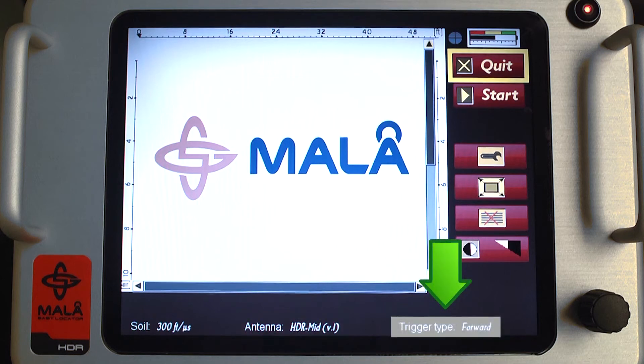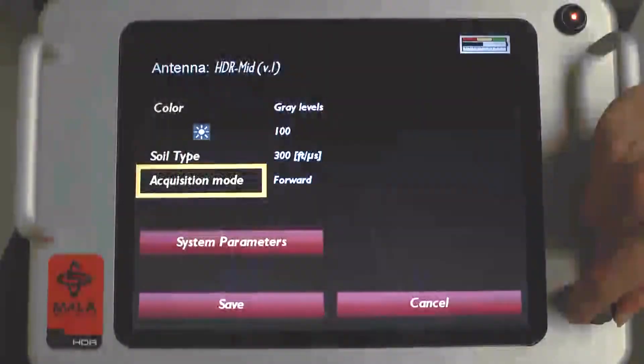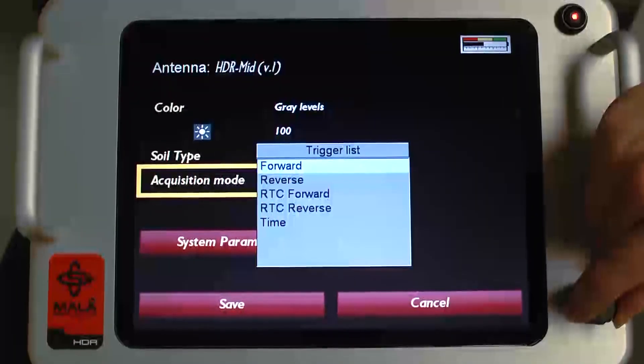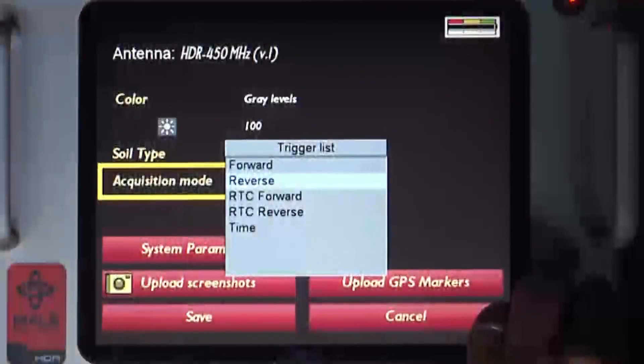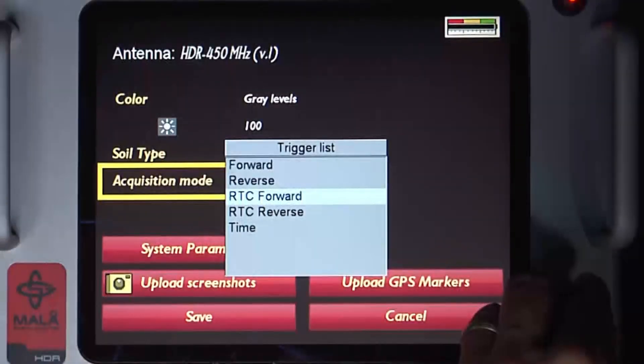Trigger type indicates the direction the surveys will be collected and the type of cart being utilized. On the small wheeled Easy Locator, select either internal forward or internal backward. On the rough terrain cart, select either RTC forward or RTC reverse.